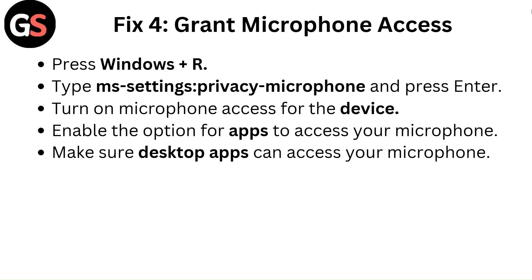Fix 4: Grant microphone access. Press Windows plus R. Type ms-settings:privacy-microphone and press Enter. Turn on microphone access for the device. Enable the option for apps to access your microphone. Make sure desktop apps can access your microphone.